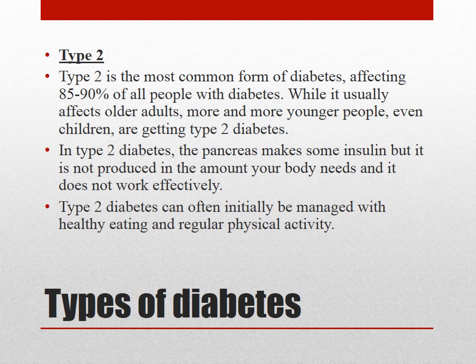Type 2 diabetes is the most common form, affecting 85 to 90 percent of all people with diabetes. It usually occurs in older adults but sometimes we're now seeing it in children. In Type 2 the pancreas does make some insulin but it doesn't produce enough and it doesn't work effectively. It can usually be managed with healthy eating and regular physical activity, but sometimes people with Type 2 diabetes also need insulin injections. A big risk factor for Type 2 diabetes is being overweight.